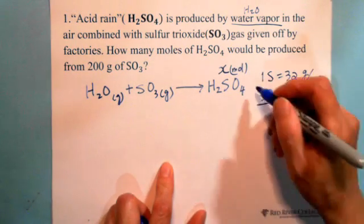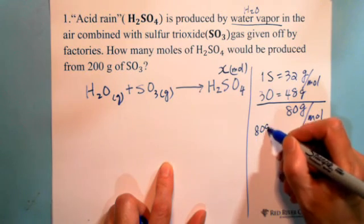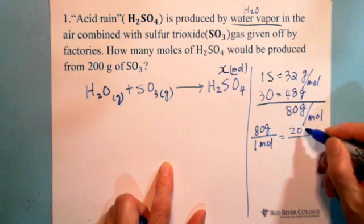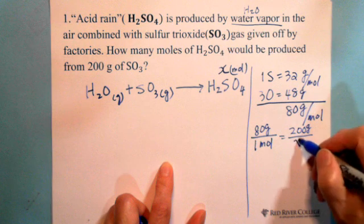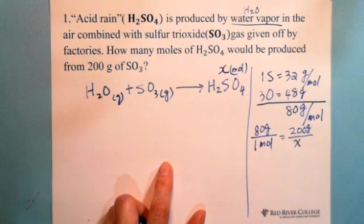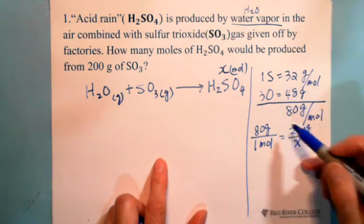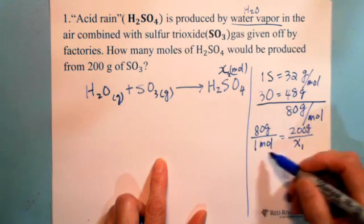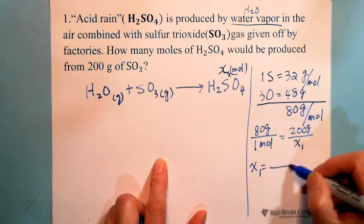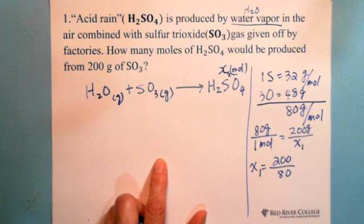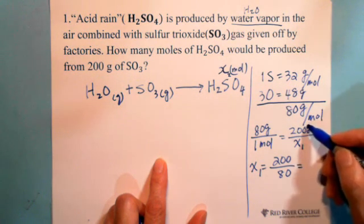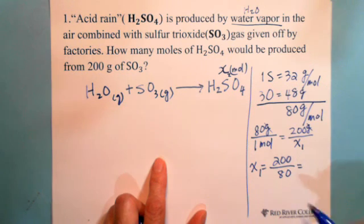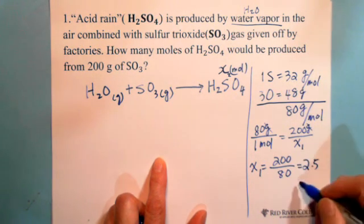We can use ratio proportion. 80 grams is equivalent to 1 mole. Now you have 200 grams, equivalent to how many moles? So I'll call this x1. Cross multiplication: x1 equals 200 divided by 80. The gram units cancel out, and x1 is in moles. 200 divided by 80 gives us 2.5. So we have 2.5 moles of sulfur trioxide.